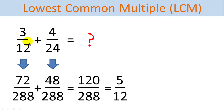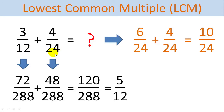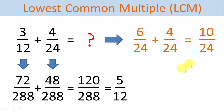An easier way to solve this problem is to recognize that 24 is a common denominator. So 4 twenty-fourths we don't have to convert at all. For 3 twelfths, we simply multiply both the numerator and the denominator by 2 to get 6 twenty-fourths. Now we can simply do the addition and we get 10 over 24, which easily reduces to 5 twelfths — the same solution.